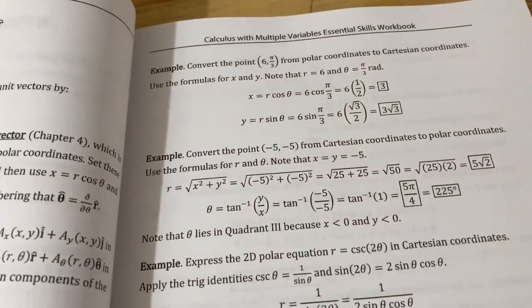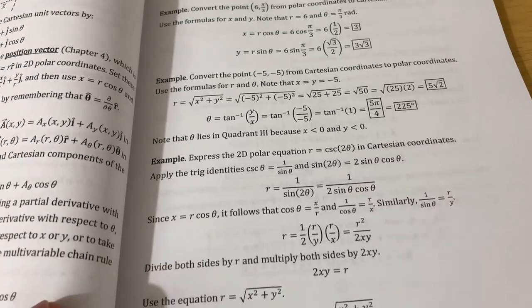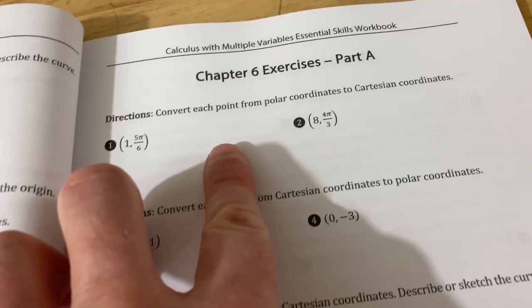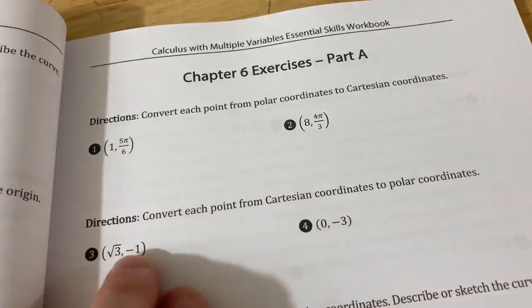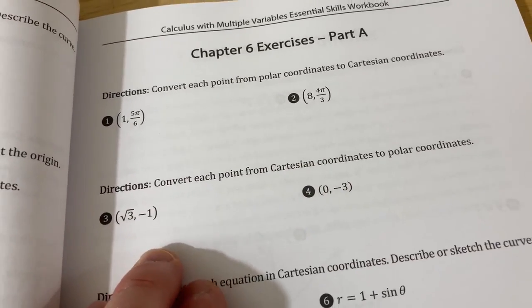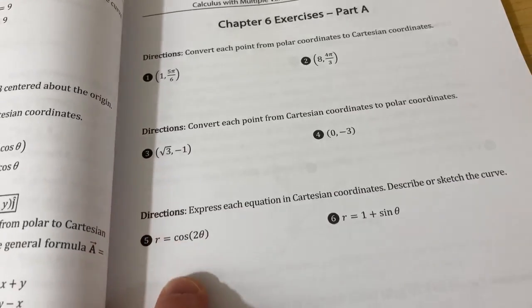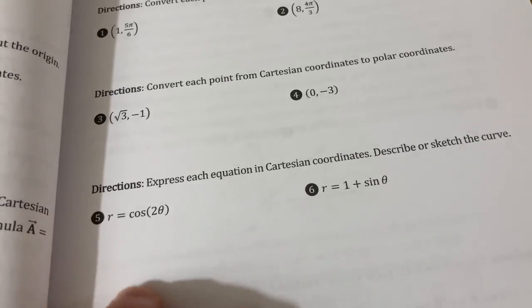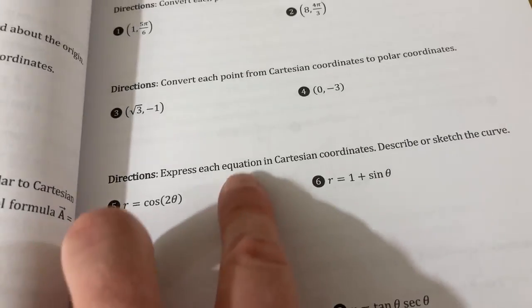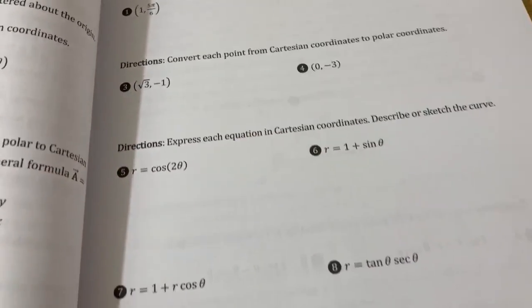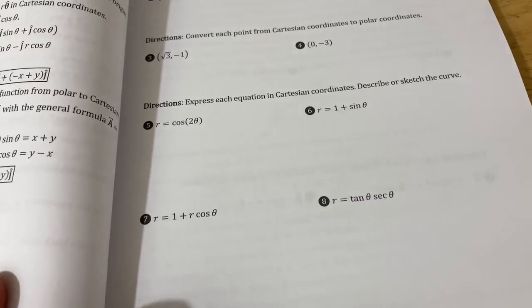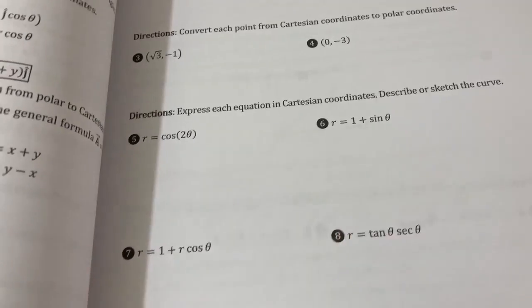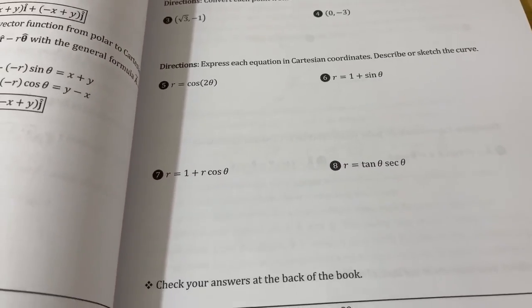And then there's more examples here. And then as far as the problems in this section, they're pretty limited. So you've got some here where you plot a point and then convert. And then same thing here, convert and plot. And then here you have to express each equation in Cartesian coordinates. So typical problems you would see in perhaps a calculus two class or perhaps a trigonometry class.